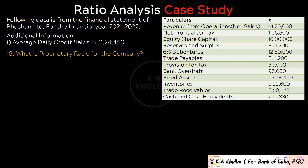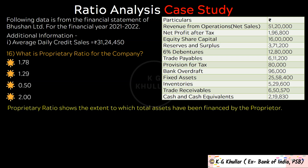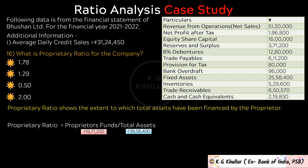The next question is: What is proprietary ratio of the firm? Proprietary ratio shows the extent to which total assets have been financed by the proprietor. It is calculated as proprietors funds divided by total assets. Proprietors funds are Rs. 19,71,200 and total assets are Rs. 39,58,400. So proprietary ratio = Rs. 19,71,200 divided by Rs. 39,58,400, which equals 0.50. The correct option is option C.